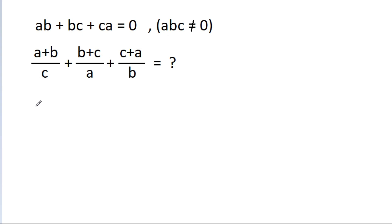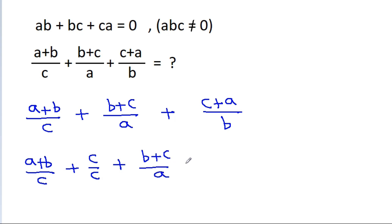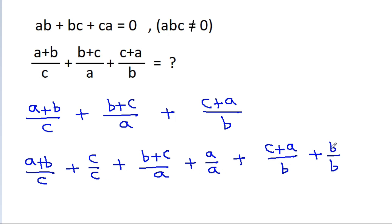We have to find the value of (a + b)/c + (b + c)/a + (c + a)/b. If we add c/c to the first term, a/a to the second, and b/b to the third — since c/c, a/a, and b/b each equal 1 — we need to subtract 3.